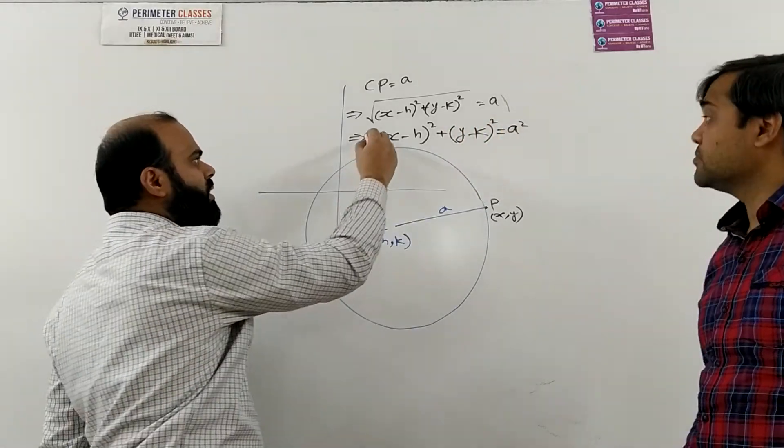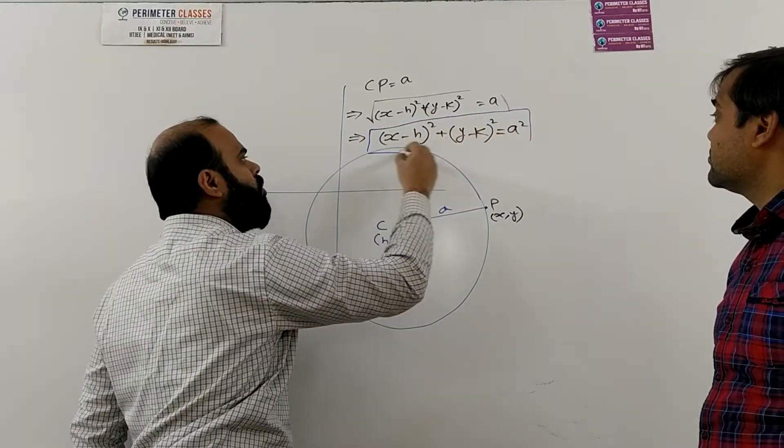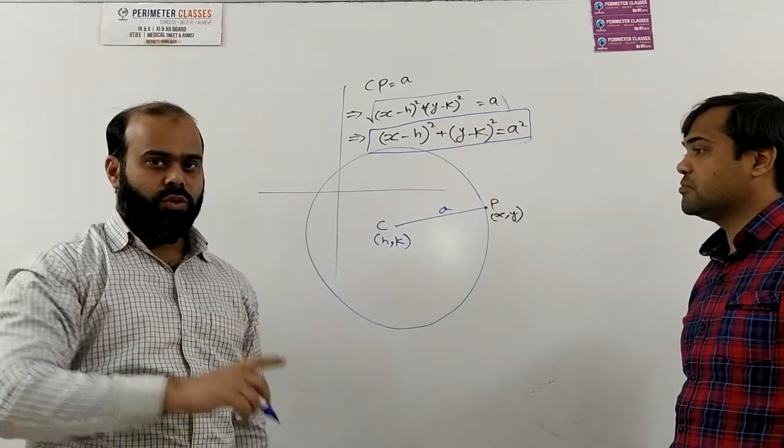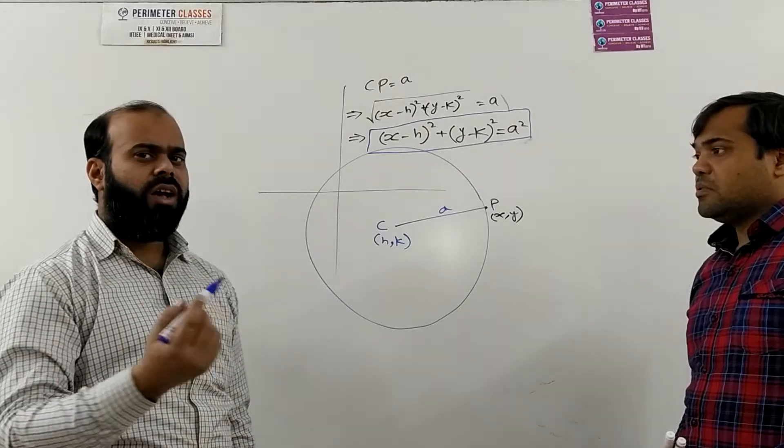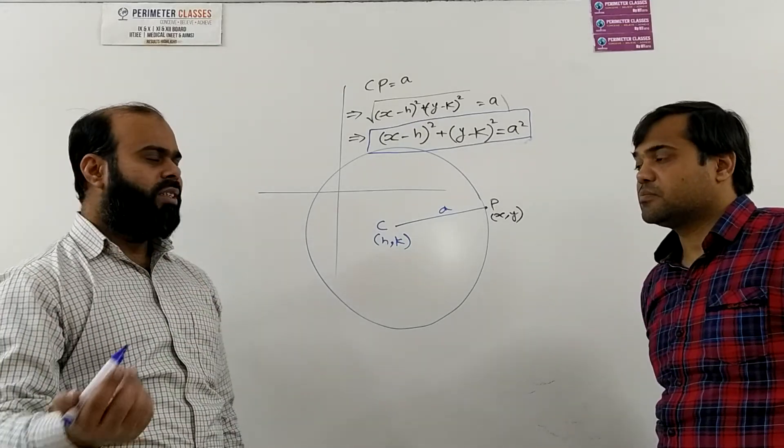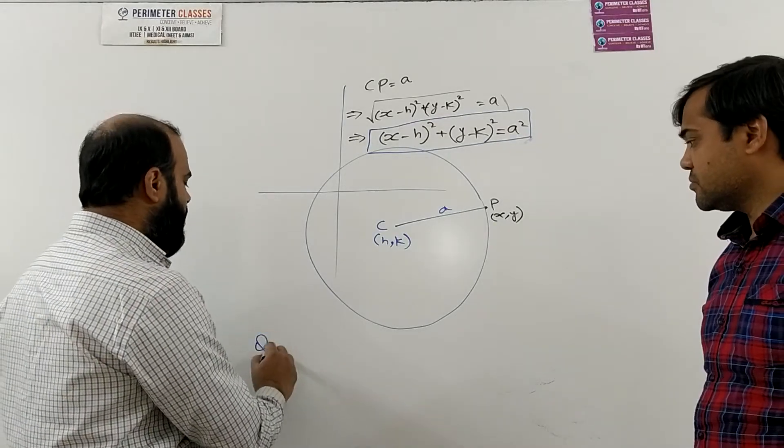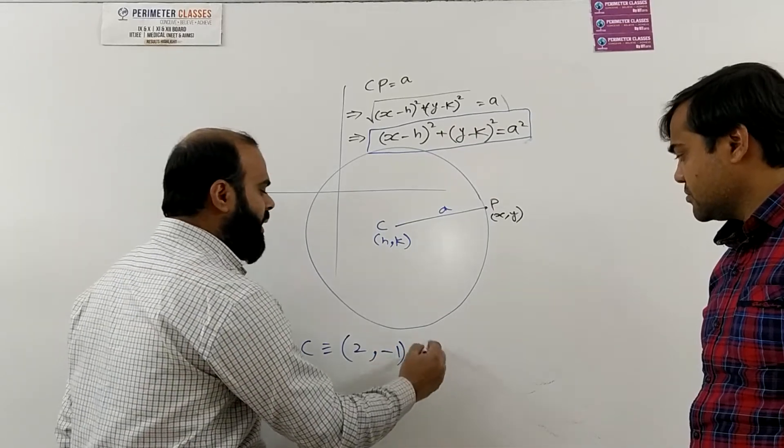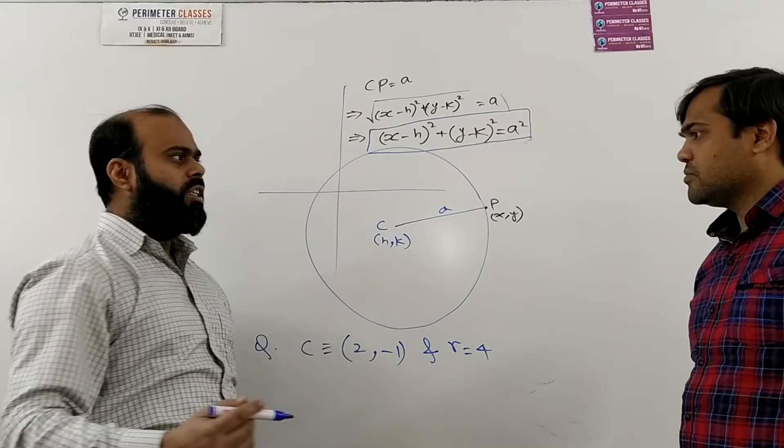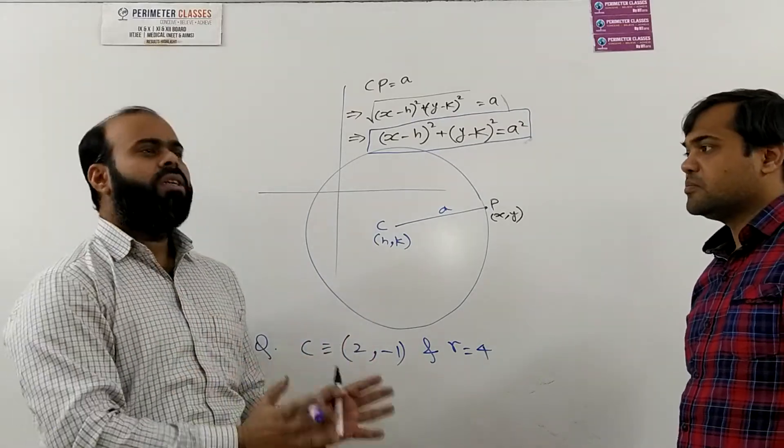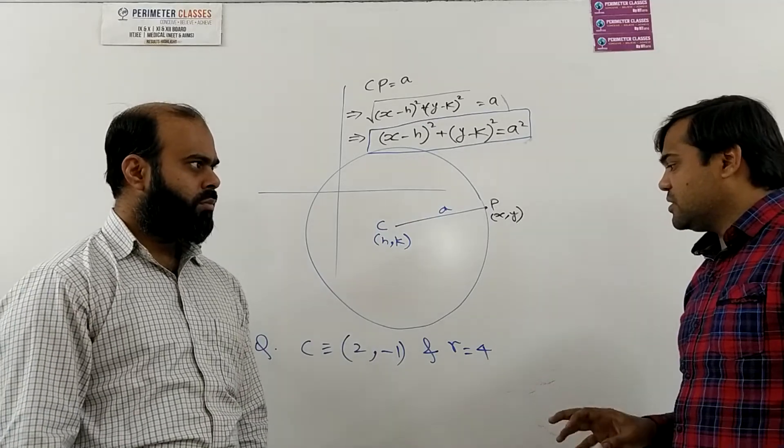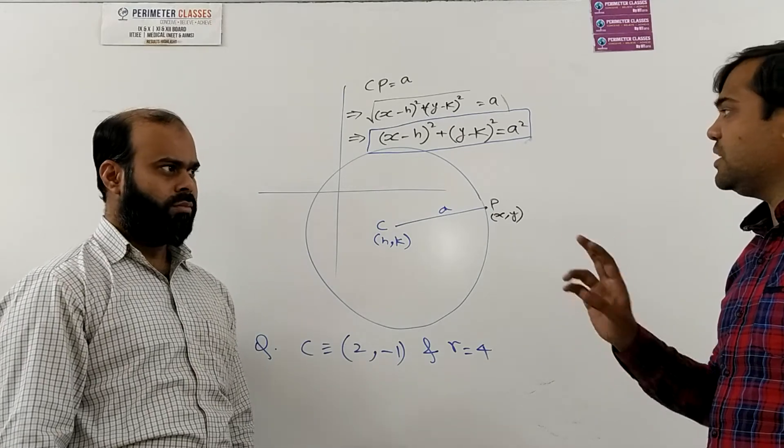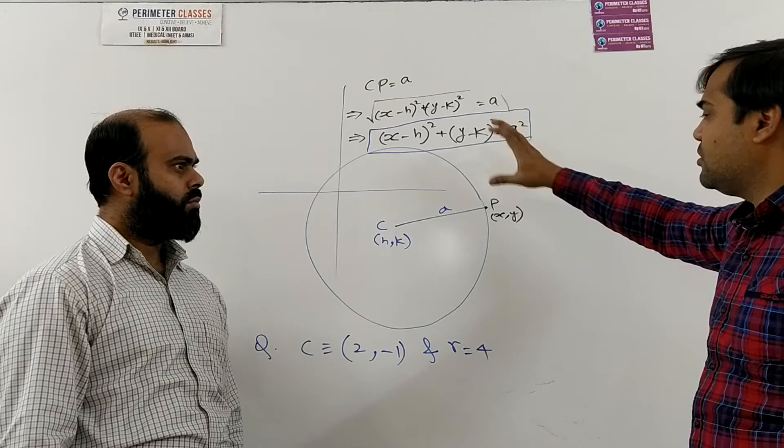So this is the equation of a circle whose center is having coordinate h and coordinate k and radius a units. So if I want to ask them to find the equation of a circle whose center is given let us suppose 2 comma minus 1 and radius is given 4 units. So it is now very easy to get the equation of this circle. To find the equation of a circle what we require is the coordinate of its center and radius of the circle. These two things are given then anybody just by using this expression can find the equation of that circle.